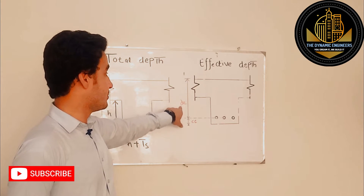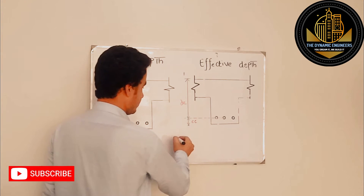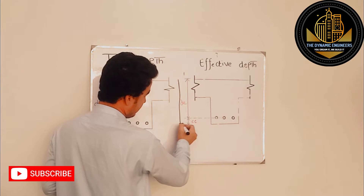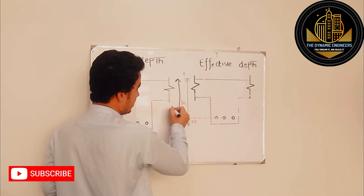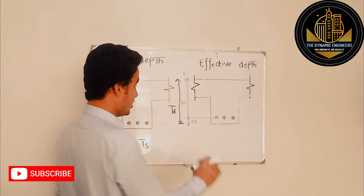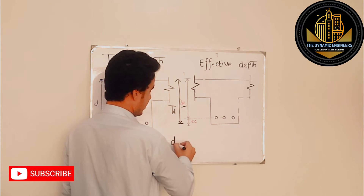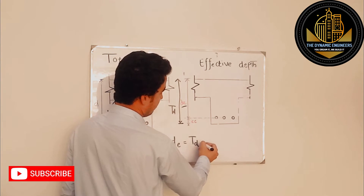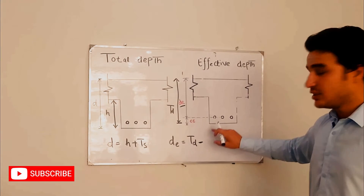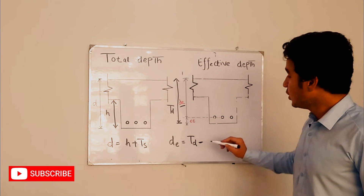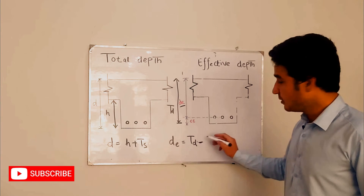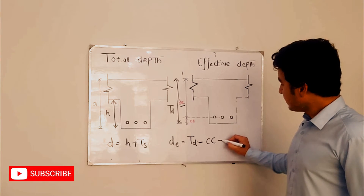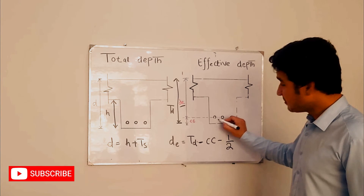So how will we calculate this effective depth? The formula is: effective depth De equals total depth (from top to bottom) minus concrete cover minus half of the diameter of the bar. If you look at the diagram, the total depth goes from here to here, so effective depth equals total depth minus concrete cover minus half the diameter of the bar.